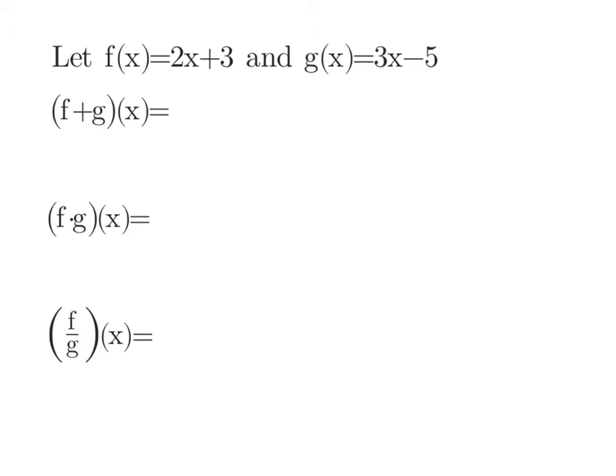If we have that f(x) is 2x+3 and g(x) is 3x-5, when we want to find (f+g)(x), that means to take the function f(x), which we have here is 2x+3, and add it to g(x), which is the 3x-5. Of course, you should simplify that into 5x-2.